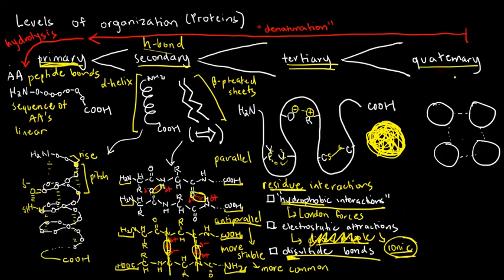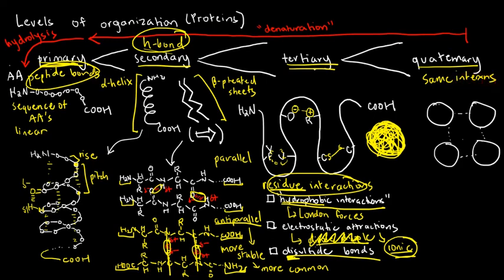But it's not yet over. We have an even higher level of organization, the quaternary level. And of course, you might ask, on top of peptide bonds, hydrogen bonds, and residue interactions, what else could we expect from a quaternary level? Actually, nothing else. It's actually the same interactions. But what makes quaternary higher than the tertiary in the first place? It's the fact that, in the quaternary level, you have two or more peptide strands.